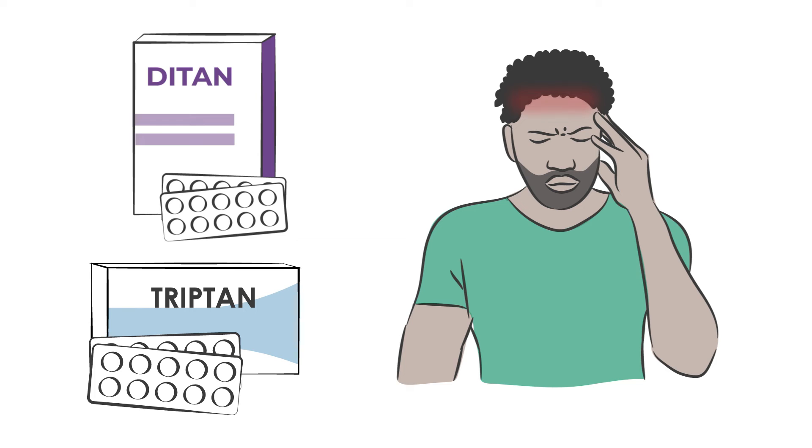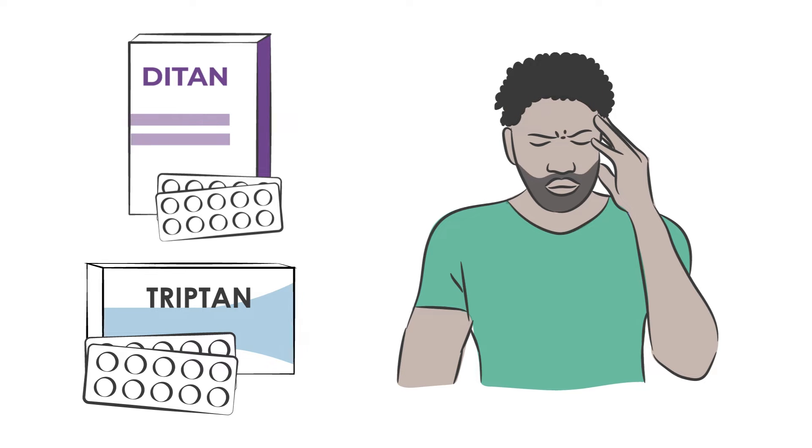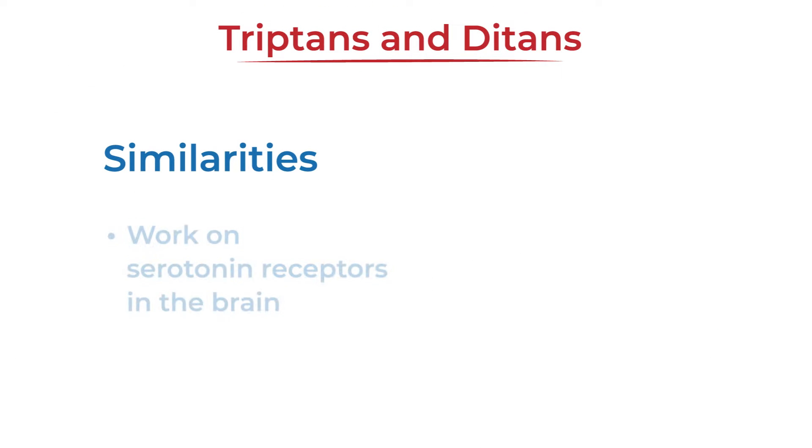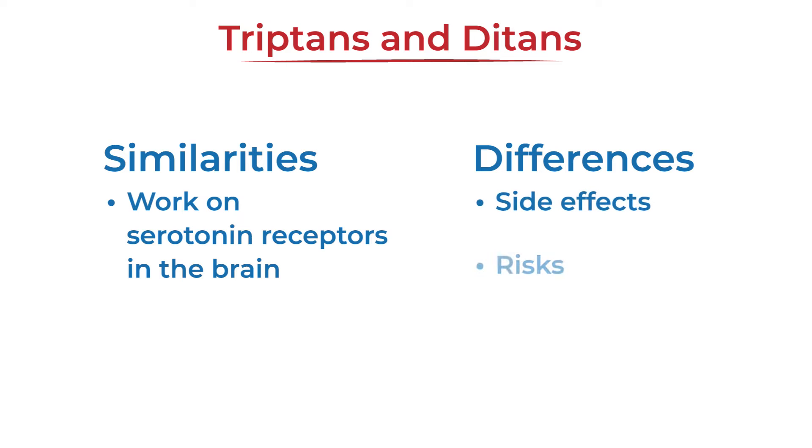Triptans and Ditans are acute treatments used to reduce or eliminate the symptoms of a migraine attack. While they both work on serotonin receptors in the brain, they differ in side effects, risks, and which specific receptors they target.